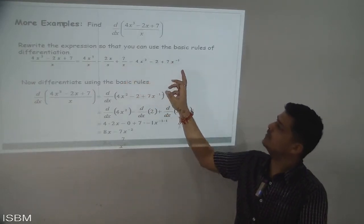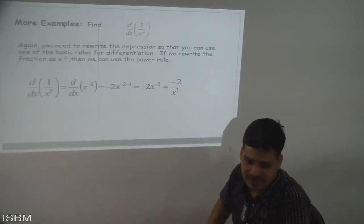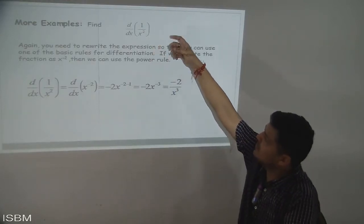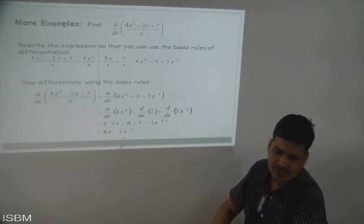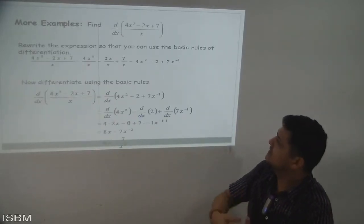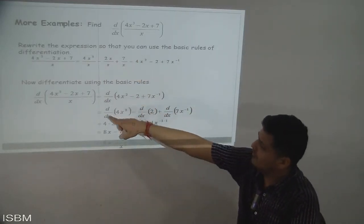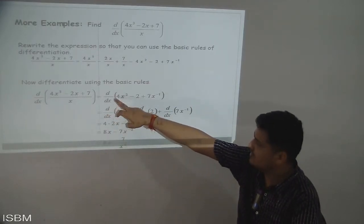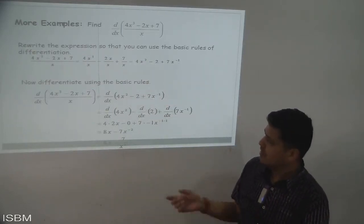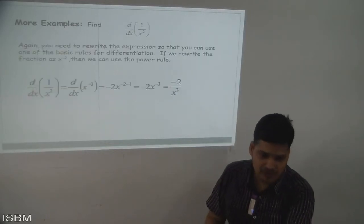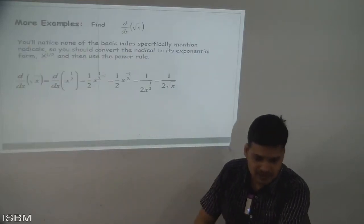The logic is: when x goes to the denominator the exponent becomes −1, so 7/x = 7x^(−1). Now we apply d/dx of 4x² − 2 + 7x^(−1), splitting into d/dx of 4x² minus d/dx of 2 plus d/dx of 7x^(−1).